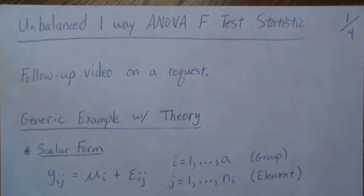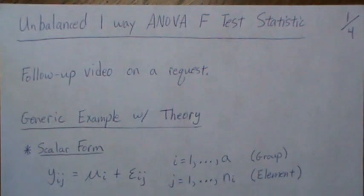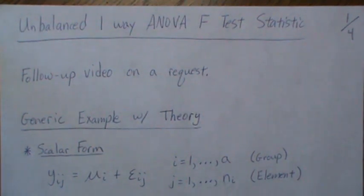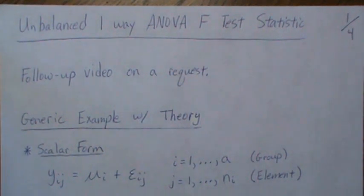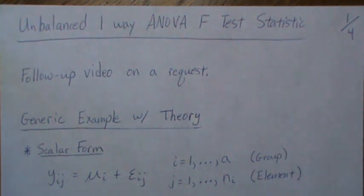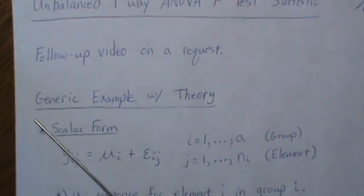Hello. In this video we're going to look at an unbalanced one-way ANOVA F test statistic. This is a follow-up video on a request — I have a video called 'Power and Sample Size in R' for the unbalanced one-way ANOVA case, and Kimmy Chin asked if I could talk about why the F test statistic follows a central F under the null hypothesis and a non-central F under the alternative hypothesis.